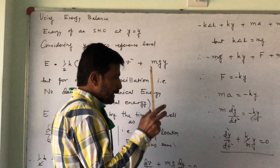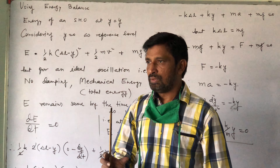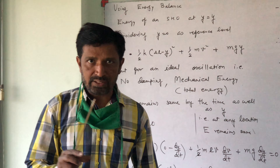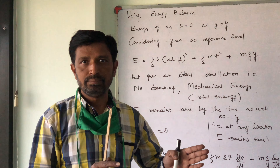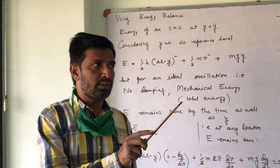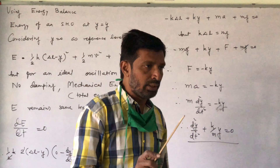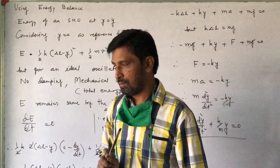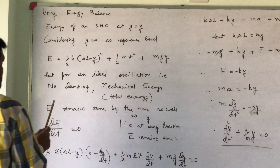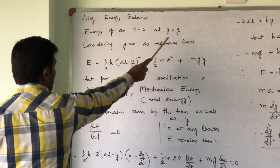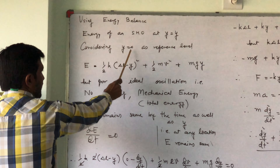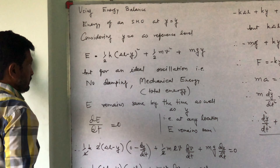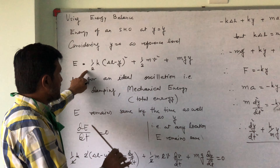In our case we have suspended the spring in the vertical direction, so we may wonder: should g appear in the formula for periodic time T? But finally we got T = 2π·√(m/k) and g is absent. To clarify this, we use the energy balance approach. The energy of a SHO at position y, with y = 0 as reference level: at that location the extension of the spring is δl − y.